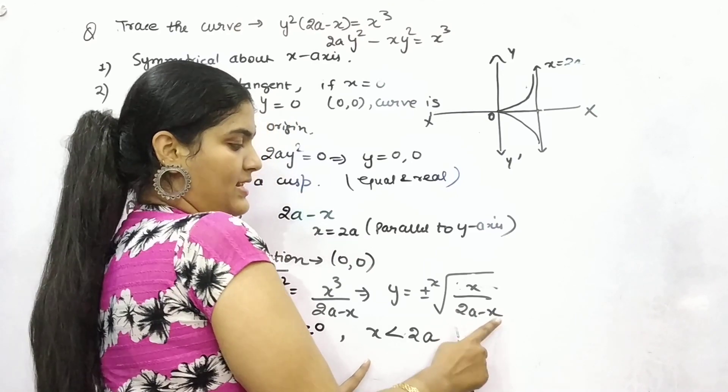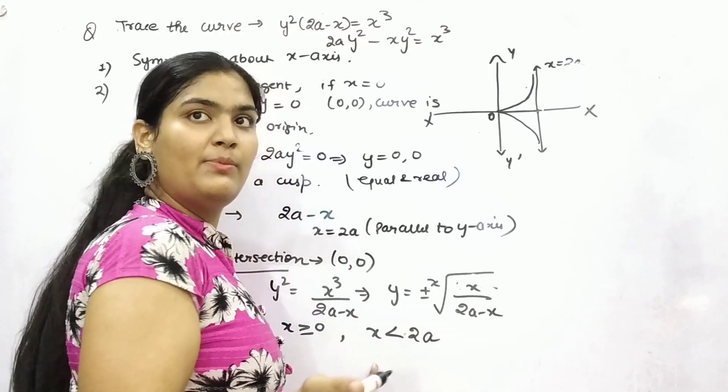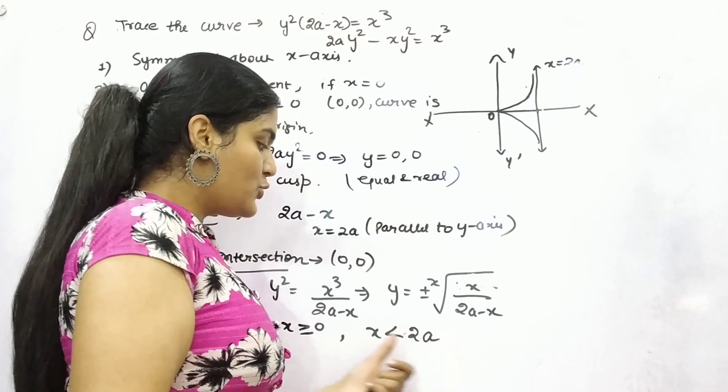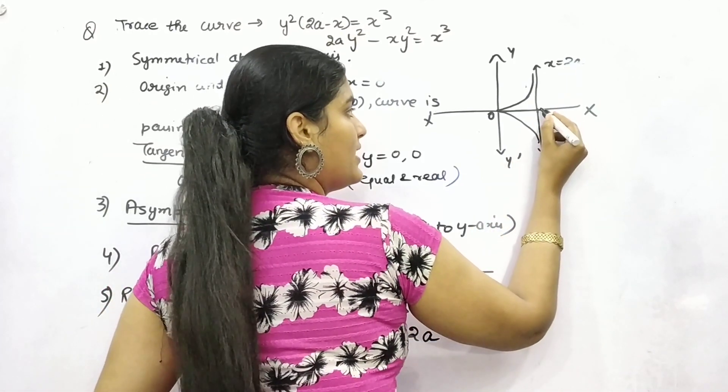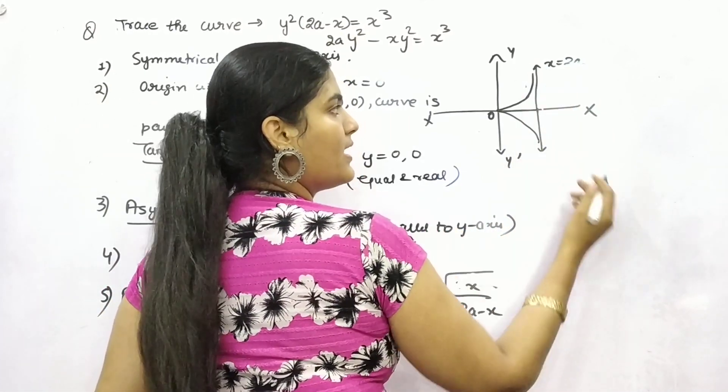Because if it will be more than 2a, then let's say 3a, 2a - 3a is minus, which will make it imaginary. So it should be less than 2a. So this is your 2a, it should be less than. This is your curve.